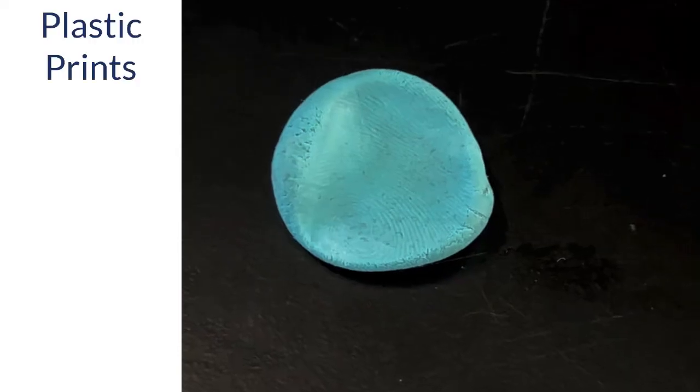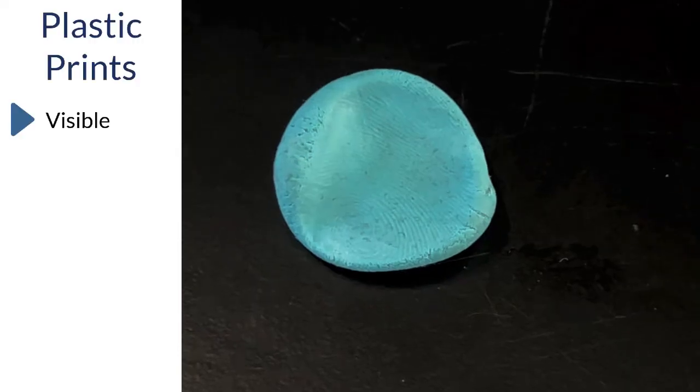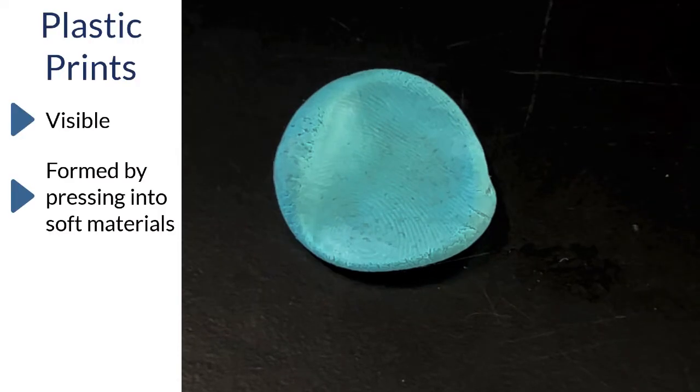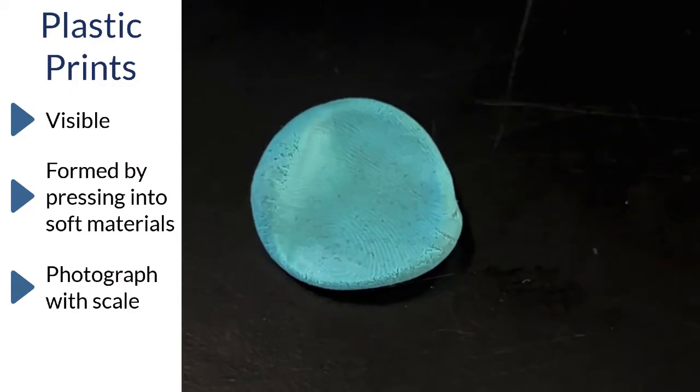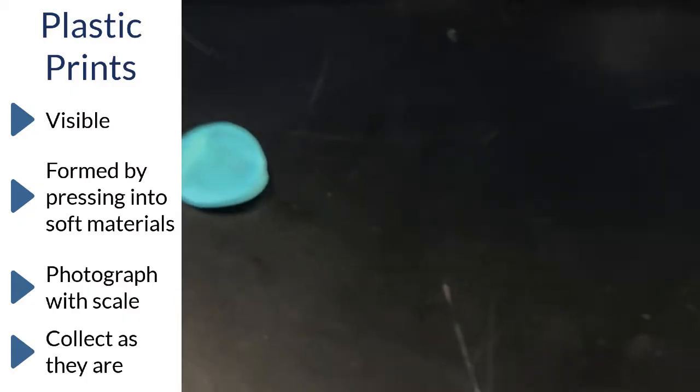The last type of print we will examine are plastic prints. Plastic prints are visible impressions made by pressing in a soft material such as wax or clay. To document plastic prints, photograph them with a scale. Plastic prints do not need to be developed and can be collected as they are.